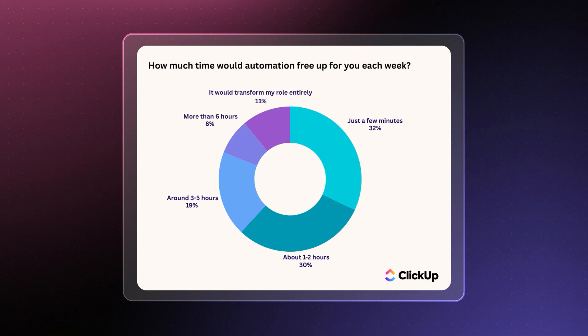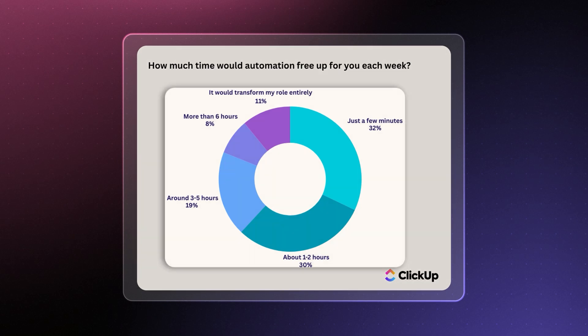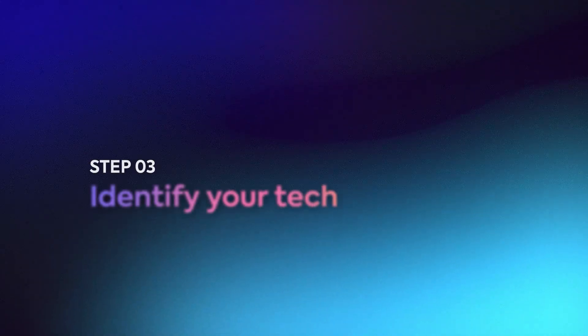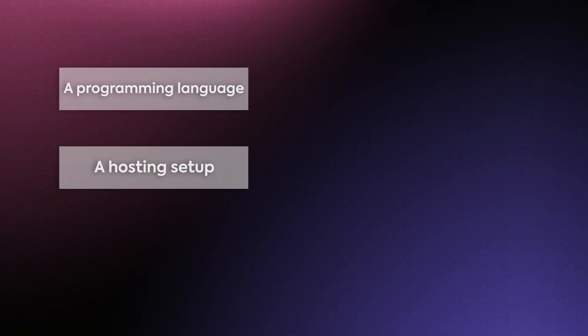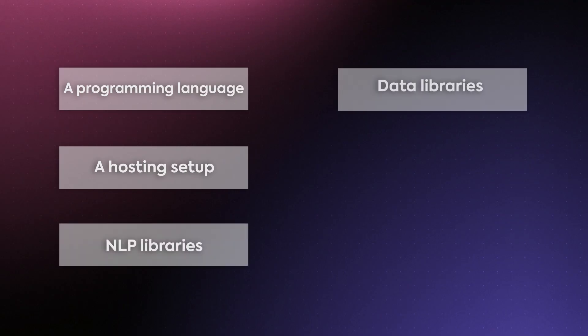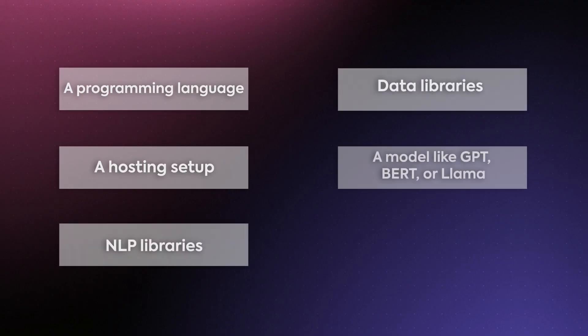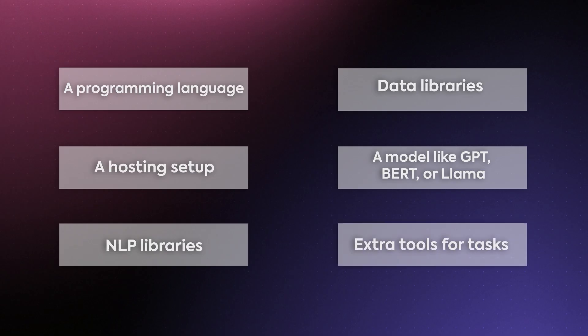Time savings are the whole point of building one. With agents and automations, 50% of people are already saving about one to five hours each week. The next step is choosing the technology your AI agent will run on. Normally, this means deciding on a programming language, a hosting setup, NLP libraries, data libraries, and a model like GPT, BERT, or LLaMA to power the agent — plus access to specialized vision or speech tools if needed.